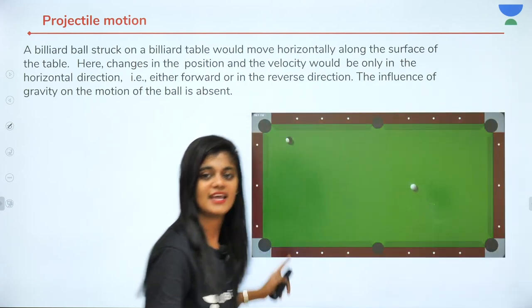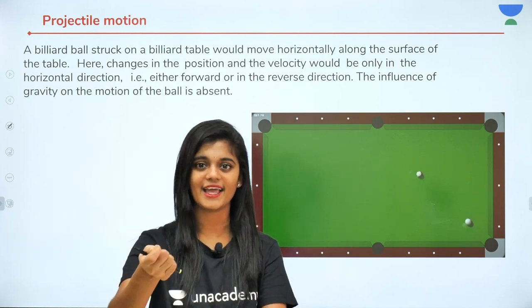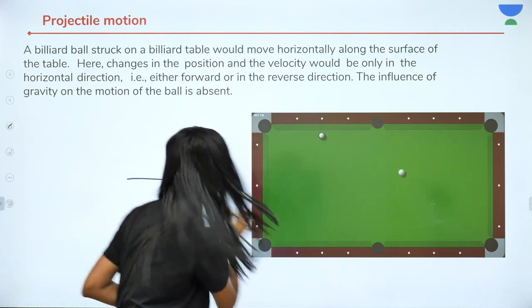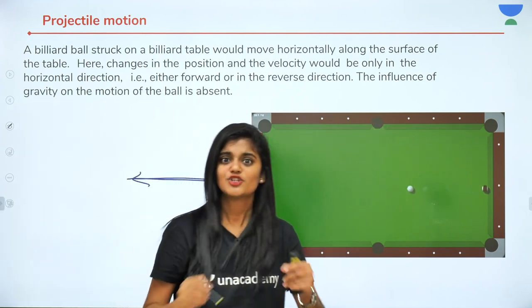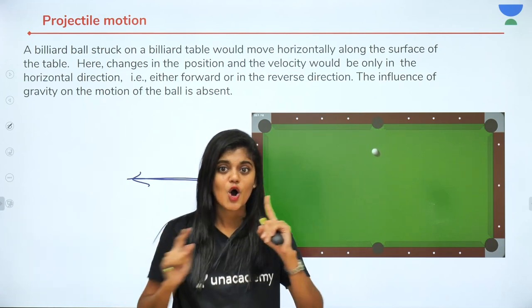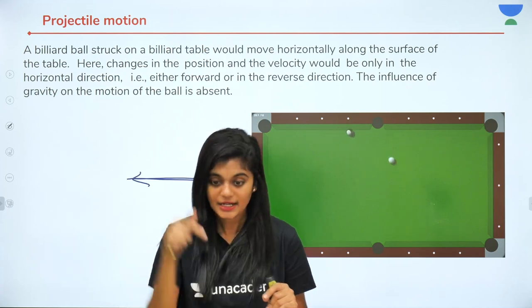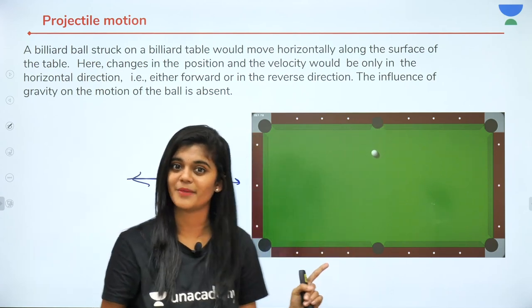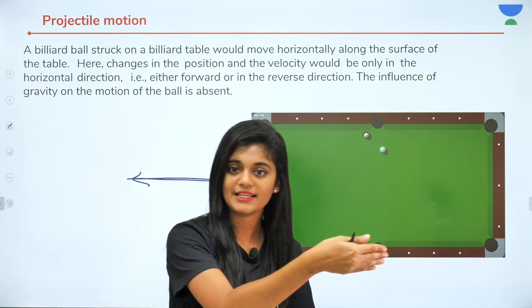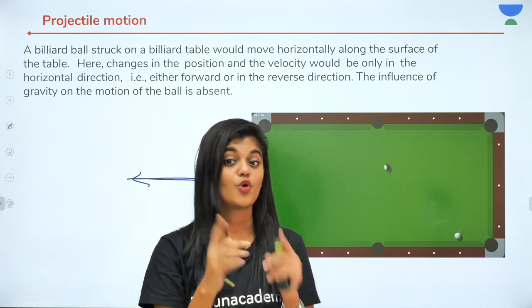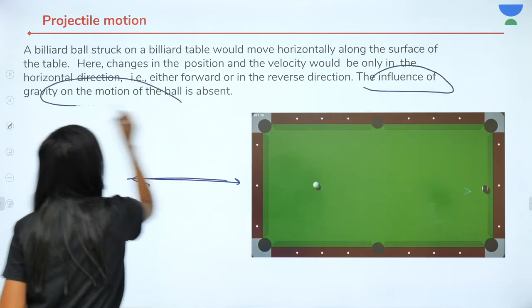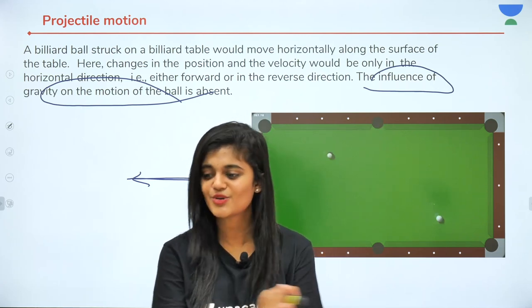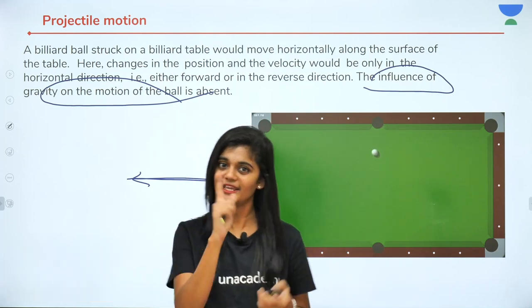Another example: a billiard board. When you play snooker, the ball only has horizontal motion — it can go forward or backward. There is no force of gravity acting in this case. So in horizontal motion there is no influence of gravity, because gravity acts only downwards. In vertical motion there is acceleration due to gravity, but in horizontal motion gravity has no role.